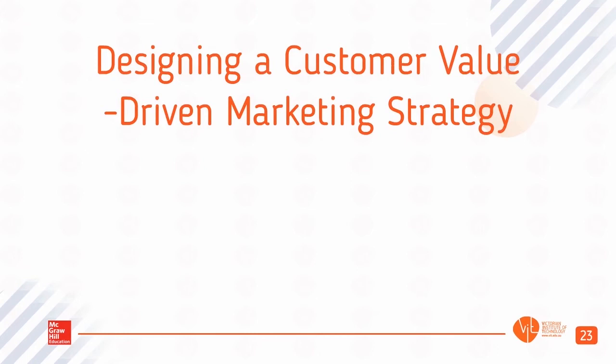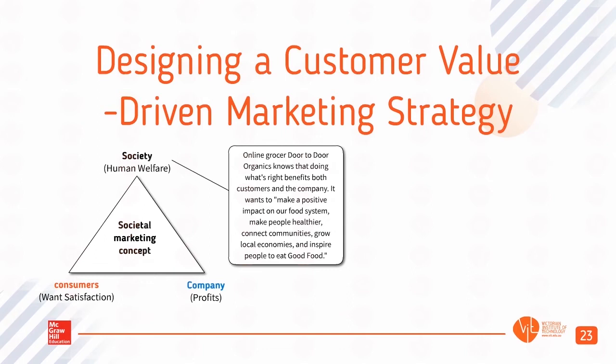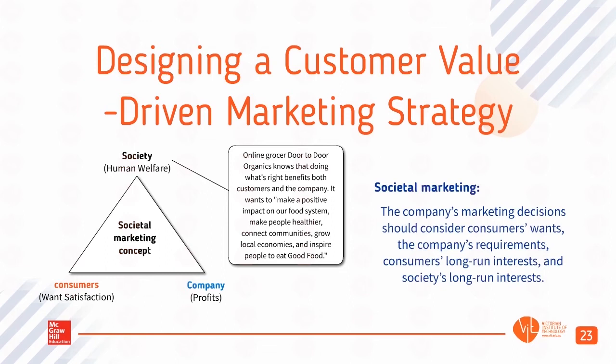Designing a Customer Value-Driven Marketing Strategy — Societal Marketing Concept balances three considerations: Society (Human Welfare), Consumers (Want Satisfaction), and Company (Profits). Online grocer Door-to-Door Organics knows that doing what's right benefits both customers and the company. It wants to make a positive impact on our food system, make people healthier, connect communities, grow local economies, and inspire people to eat good food. The company's marketing decisions should consider consumers' wants, the company's requirements, consumers' long-run interests, and society's long-run interests.